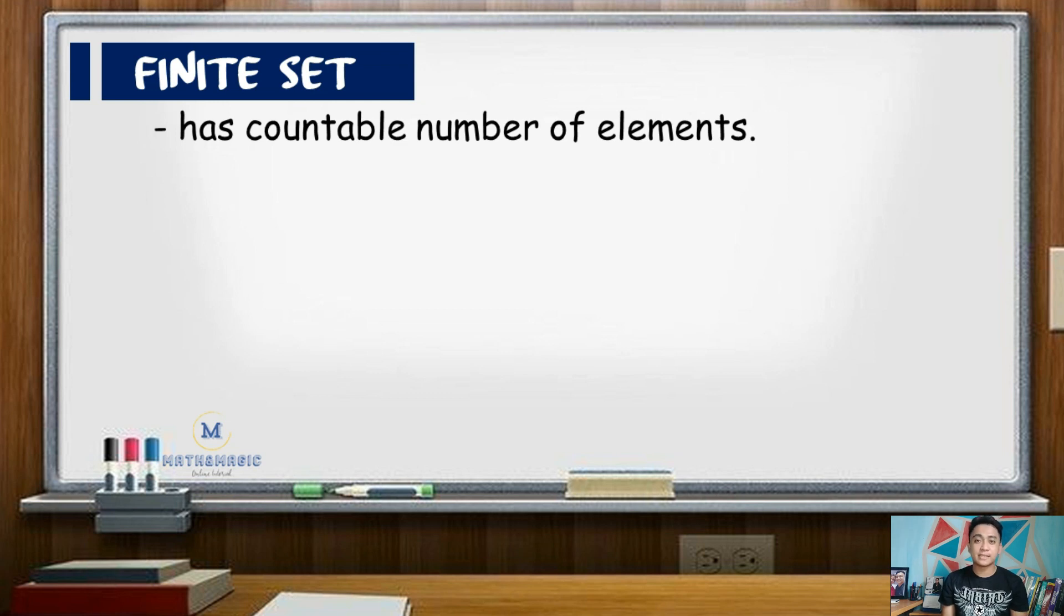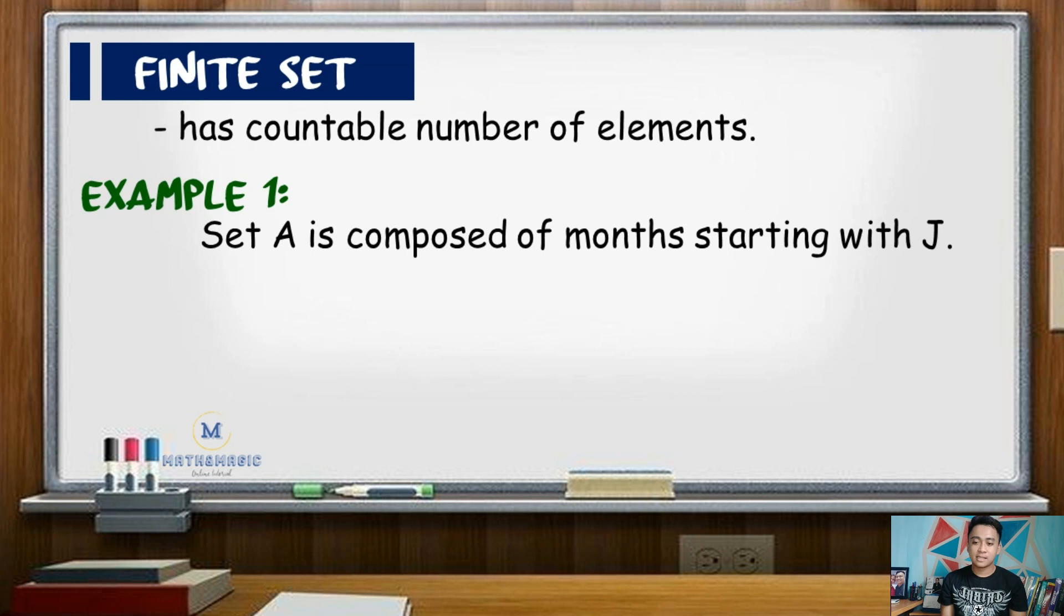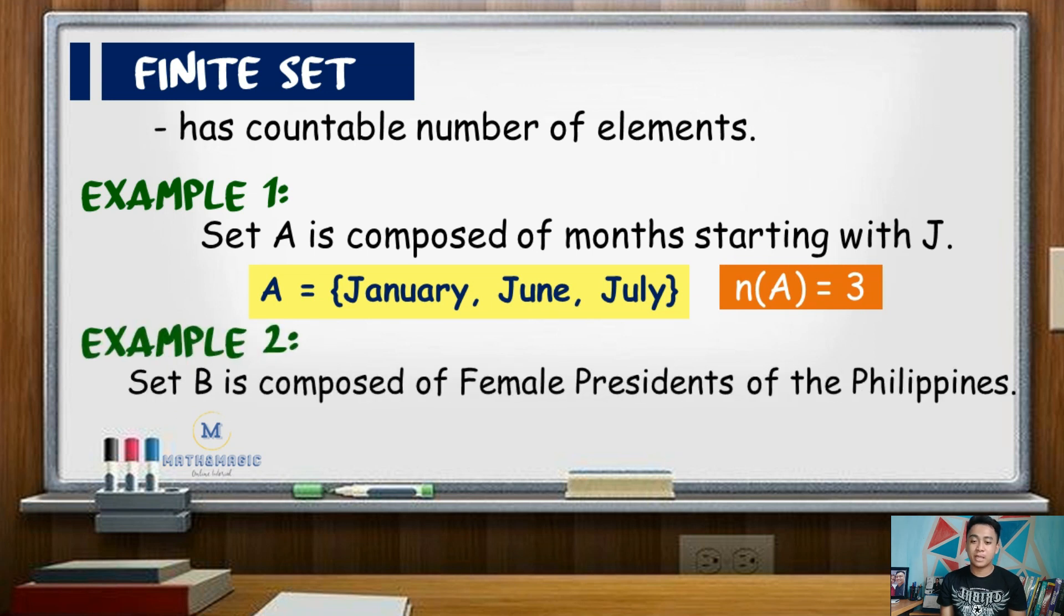So, the following are examples of finite sets. Set A, that is composed of months that starts with J. So, elements are January, June, and July. Its cardinality is 3. Set B, composed of female presidents of the Philippines. Elements are Mrs. Gloria Macapagal Arroyo and Mrs. Corazon Aquino. Thus, the cardinality of set B is 2.